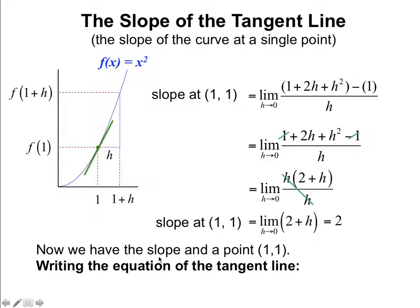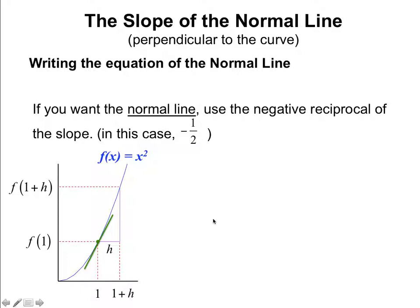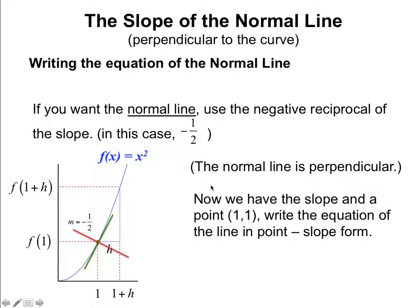Now we have slope = 2 and point (1, 1). Writing the equation of a tangent line: we'll use point-slope form. That's y equals 2 times the quantity x minus 1, plus 1. For the normal line — which means perpendicular — we use the negative reciprocal of the slope. If the slope was 2, the normal line slope is negative 1 over 2. Its equation is negative 1 over 2 times the quantity x minus 1, plus 1. The normal line cuts right across the function.